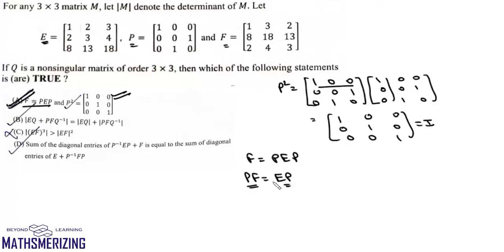From option A, we can infer that if we multiply P from the right-hand side, we can also write E = PFP. So we have these conditions: F = PEP, E = PFP, and P² = I.